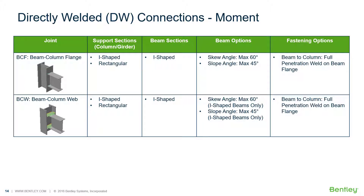Welcome to the Bentley Systems training course where you will learn how to design steel connections using RAM Connection Standalone. RAM Connection Standalone is used for the designing and detailing of steel connections — it can design individual shear, moment, brace, splice, and truss connection types to a variety of different steel design codes. In this video we are going to be focusing on the workflow for assigning a directly welded moment connection to a beam-to-column joint within RAM Connection Standalone.